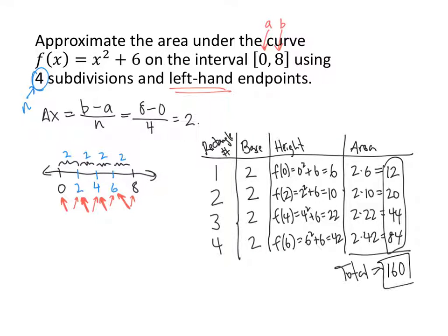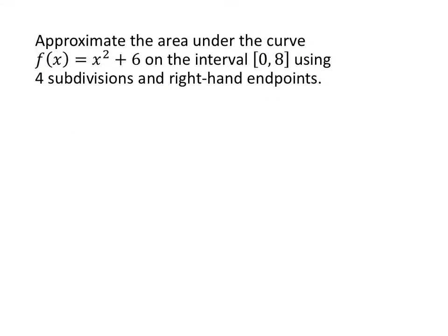Now I'm going to do the same problem again, but this time using right-hand endpoints instead of left-hand endpoints. A lot of the work is exactly the same. Delta x is still b minus a divided by n — 8 minus 0 divided by 4 — which is 2. The number line works out the same way, with dividing lines at 0, 2, 4, 6, and 8.